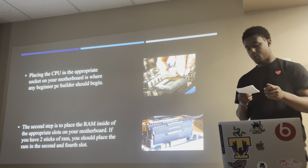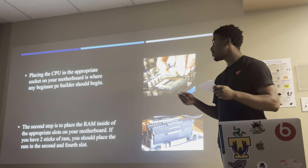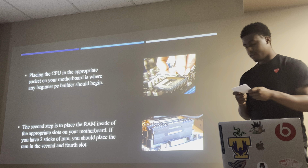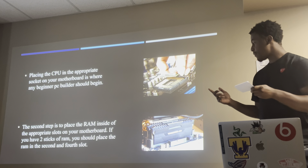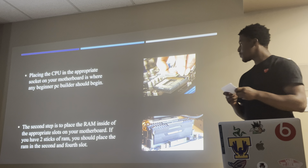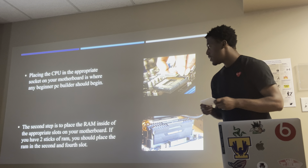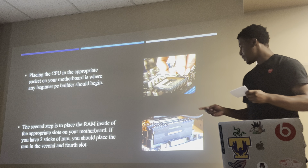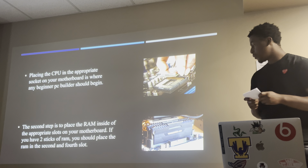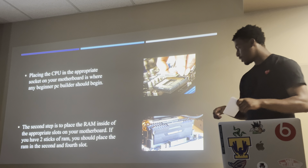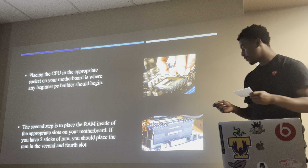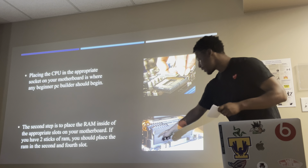Step one: you will be unboxing your CPU, then placing your new processor inside the AM4 socket on your motherboard. The second step will be unboxing your RAM and seating it in the correct slots on your motherboard, preferably slots two and four, just like shown here.